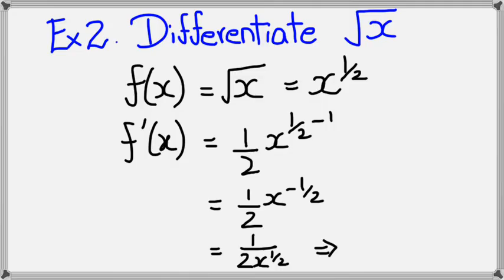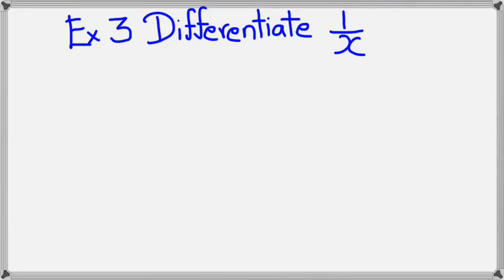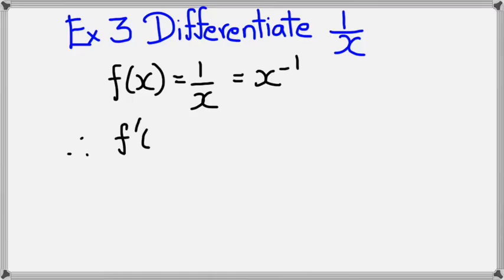Okay, next example. I want to look at differentiating one over x. So I've got f(x) equals one over x. Now one over x could be written as x to the power of negative one. Therefore, f'(x) is equal to negative one comes to the front as it's the power, x to the power of negative one take away one.